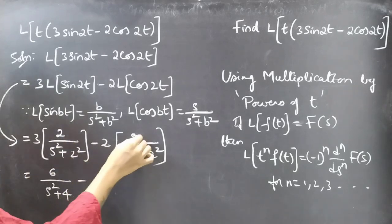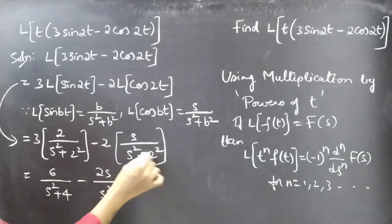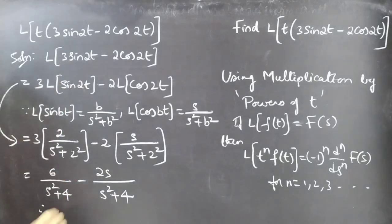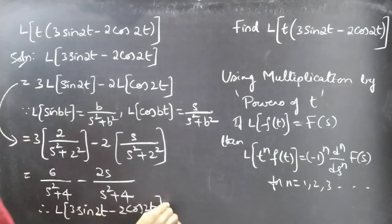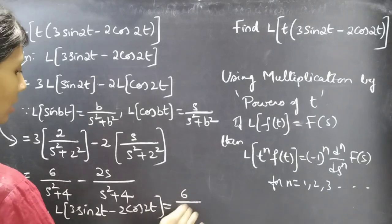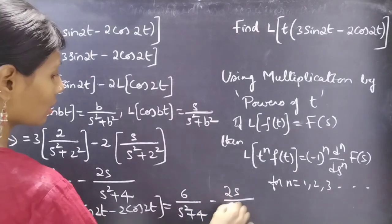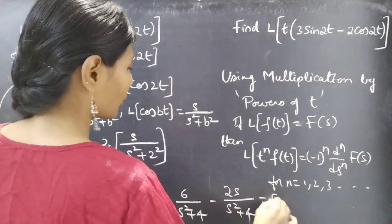This gives us 6 divided by s² plus 4 minus 2s divided by s² plus 4. Therefore L of 3 sin(2t) minus 2 cos(2t) equals 6 minus 2s all over s² plus 4, which is our F(s).